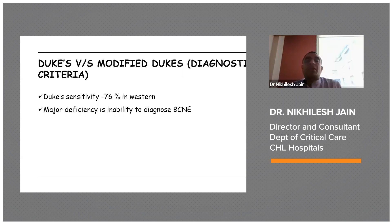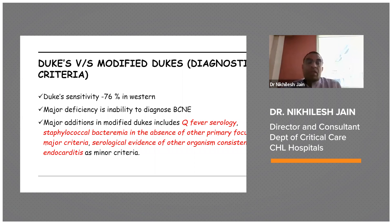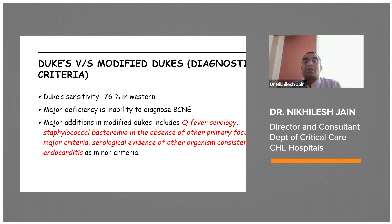The major deficiency is the inability to diagnose blood culture negative endocarditis as far as Duke's criteria is concerned. In modified Duke's, they have added Q fever serology testing, staph bacteremia and absence of another primary focus as a major criterion, and serological evidence of other organisms consistent with endocarditis as a minor criterion.